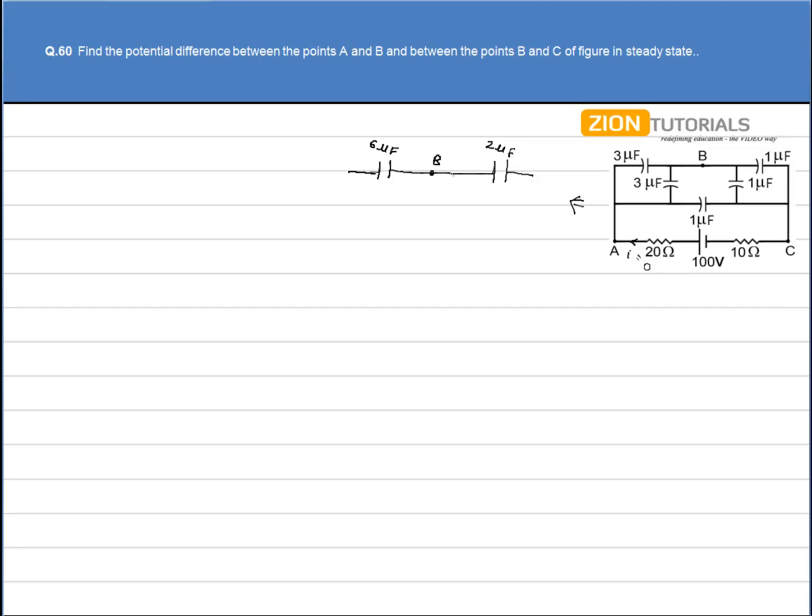Let's say this point is my B. We have 1uF in parallel. We have a straight line coming down. This is my point A, this is my point B, between which there is a resistor, a battery, and then another resistor: 20 ohm, 100V and 10 ohm. So this is my reduced circuit.